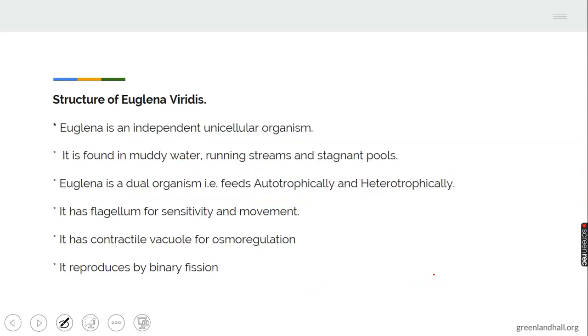Euglena is another unicellular organism, Euglena Viridis. It is also an independent unicellular organism found in water and running pools. It is a dual organism, that is, it can be a plant and it can also be an animal. It is autotrophic. It is heterotrophic. It has flagellum for movement and sensitivity. The contractile vacuole is meant for osmoregulation and excretion. It also reproduces by binary fission.